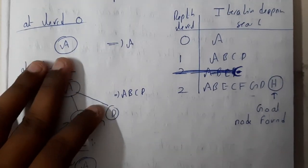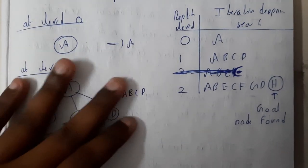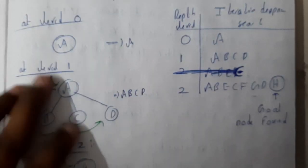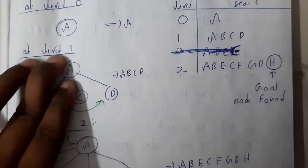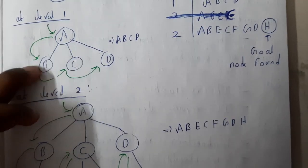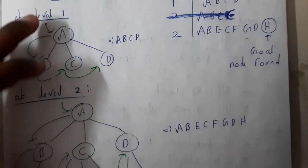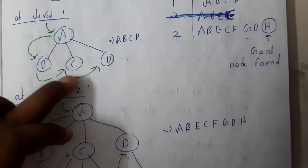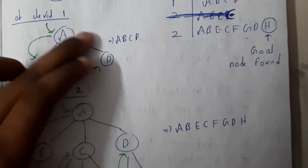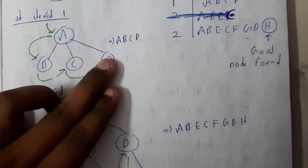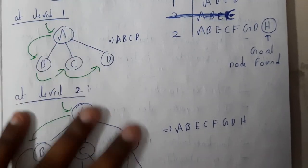At level 0 we have only node A, which is the initial node. At level 1, we add level 1 nodes: A, B, C, D. From A it goes to B, from B it goes to C, from C it goes to D. The algorithm being applied here is Depth First Search.